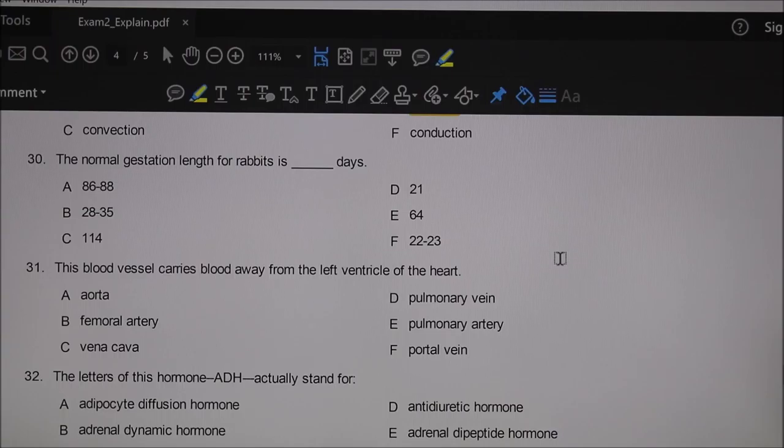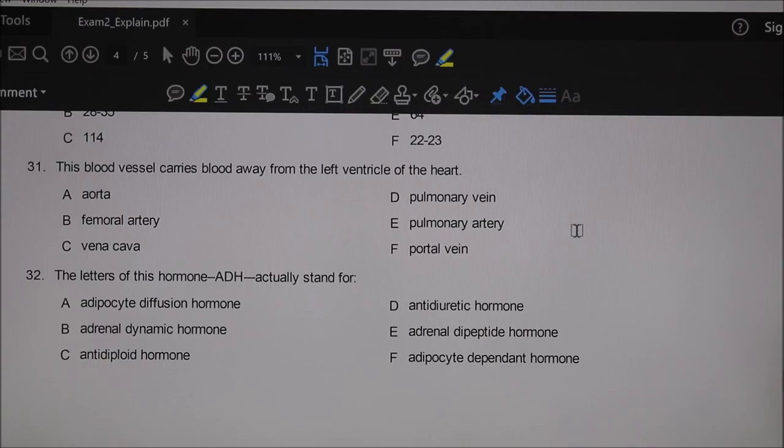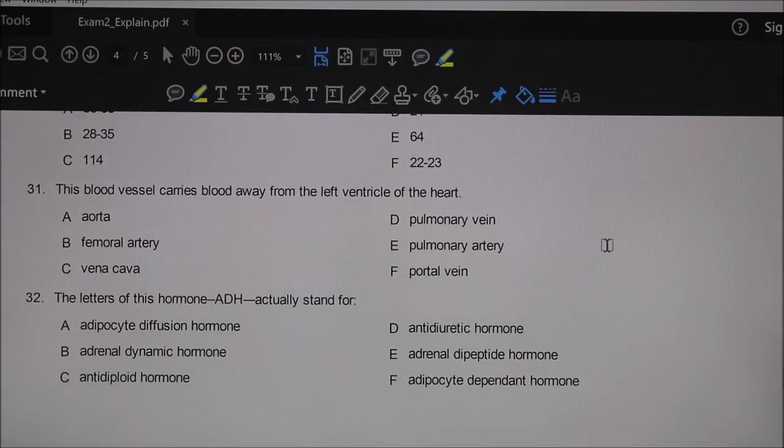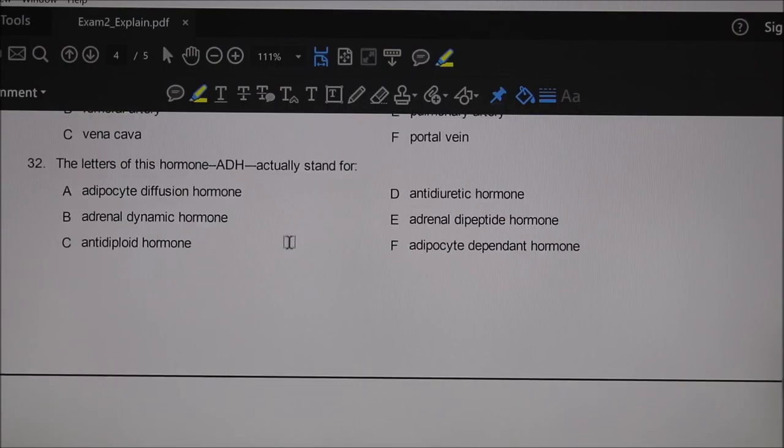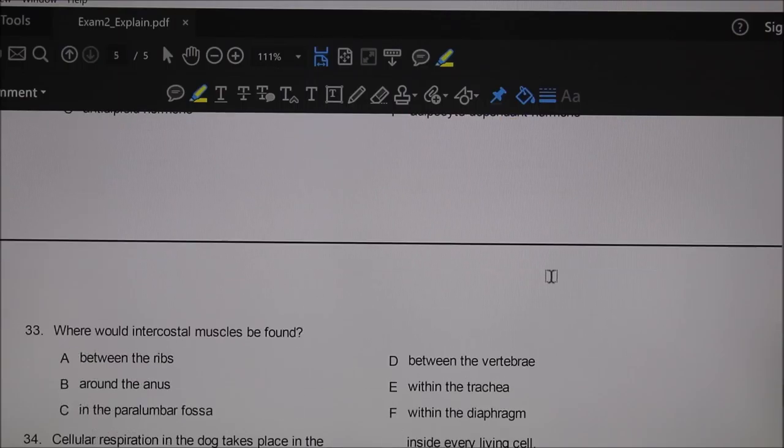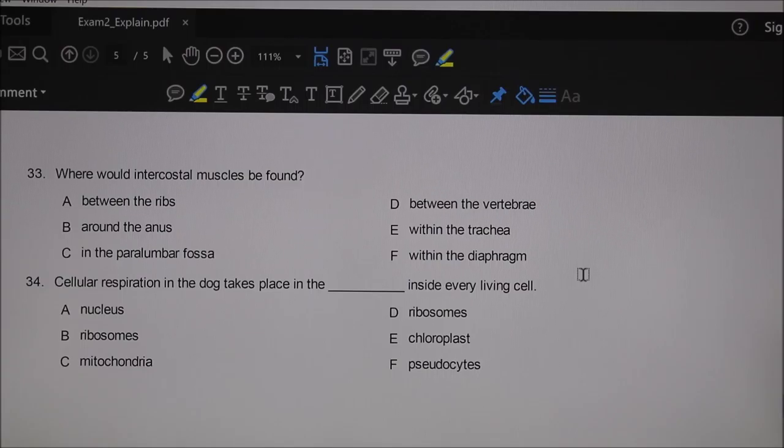This blood vessel carries blood away from the left ventricle. The left ventricle is the most powerful one—it carries oxygenated blood. Aorta carries blood away from the left ventricle. Thirty-two: ADH, we had that in one of the videos. It's anti-diuretic hormone—against making urine, so it tends to conserve water in the body.